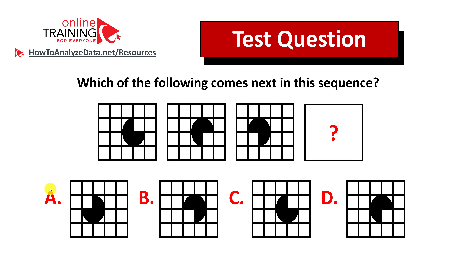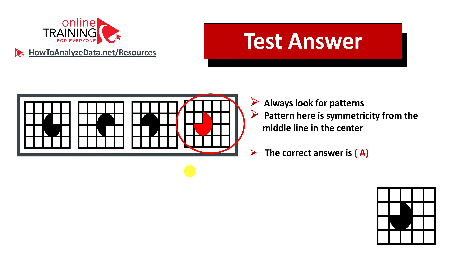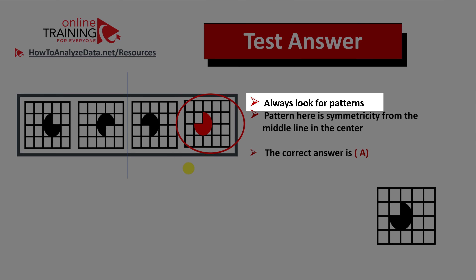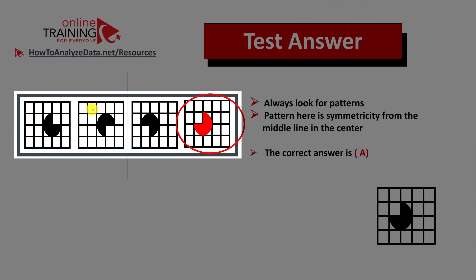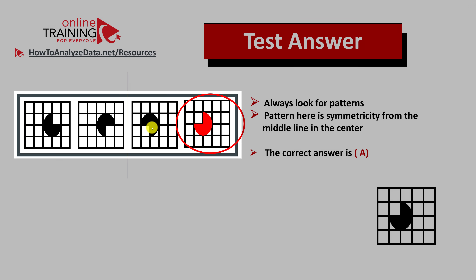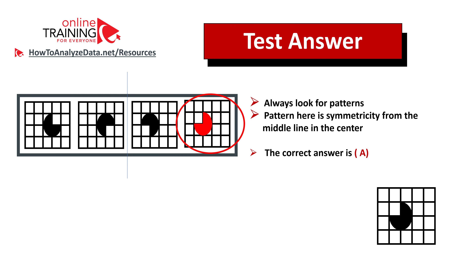Did you figure out the answer? Let's continue to see how we can get to the correct solution together. As usual, my advice is always look for patterns. And here the pattern is symmetricity. If we draw a line in the middle, you can see that the pie pieces are symmetrical — the pie in the first square mirrors the pie in the last square, and the pies in the second and third squares are also mirrored. Hopefully you've nailed this question and now know how to answer similar problems in the test.